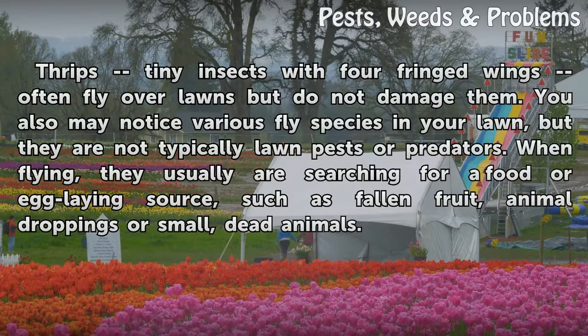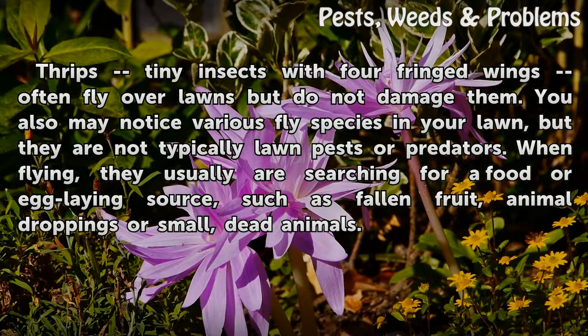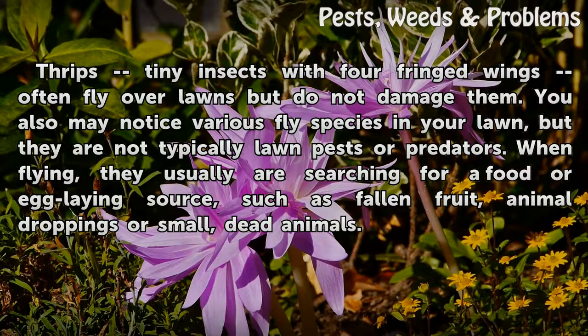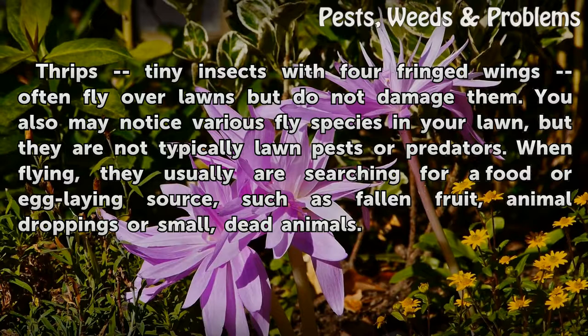Thrips — tiny insects with four fringed wings — often fly over lawns but do not damage them. You also may notice various fly species in your lawn, but they are not typically lawn pests or predators. When flying, they usually are searching for a food or egg-laying source, such as fallen fruit, animal droppings, or small dead animals.